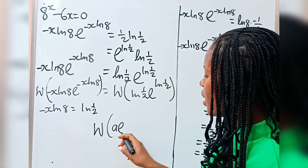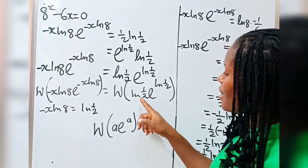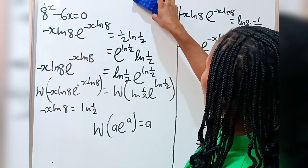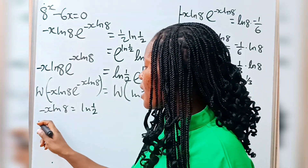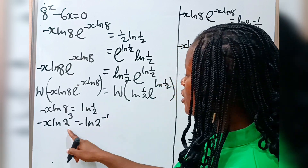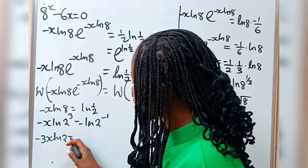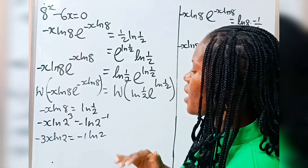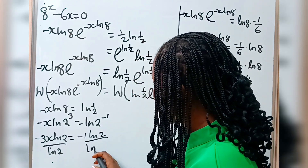In this case, our a is minus x ln 8 for this side, and our a is ln(1/2) for this side. That is why minus x ln 8 is equal to ln(1/2). Now if we keep solving, we can write ln 8 as ln 2 to the power of 3. And half is 2 to the power of minus 1. So we have minus 3x ln 2 is equal to minus 1 times ln 2. Let's divide both sides by ln 2 since we are looking for x.